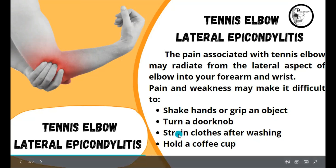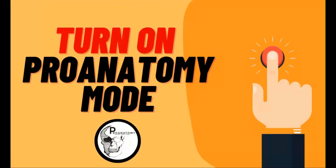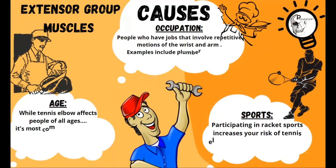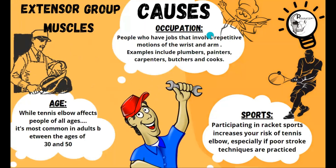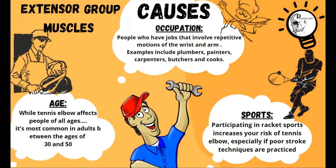That is a very important point to remember while we discuss the causes behind it. The causes behind tennis elbow can be categorized into three groups. The first is occupational causes, where people who have jobs that involve repetitive motions of the wrist and arm — particularly the extensor compartment muscles — such as plumbers doing ranging tasks or gripping a spanner, butchers chopping meat with immense pressure, and cooks as well.